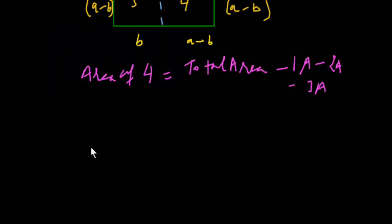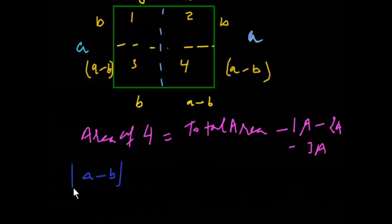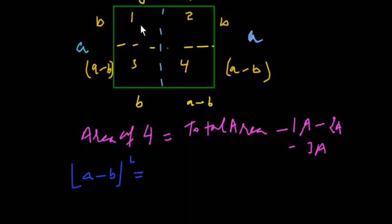Fourth area is a minus b into a minus b, so (a-b)². This is ab², this is (a-b)² into b. First of all, total area is a², length is a, breadth is a, minus second part area is minus (a-b) into b, and then third part area is (a-b) into b.